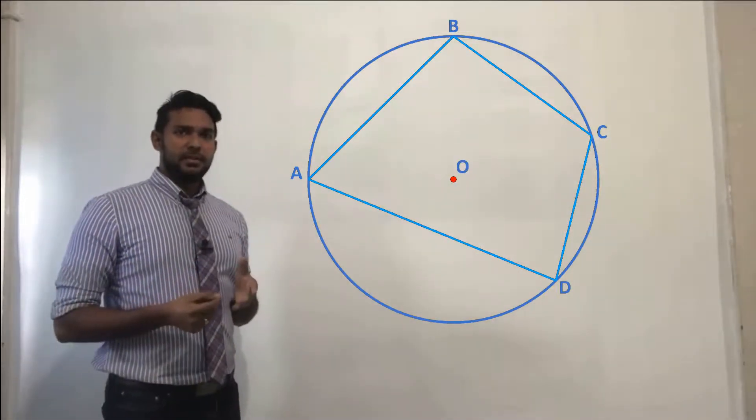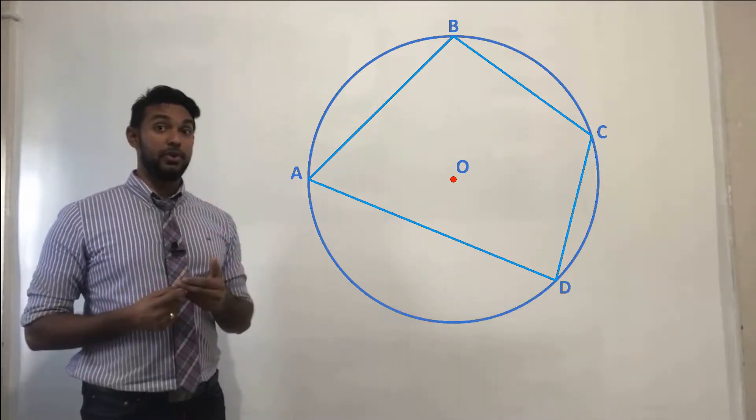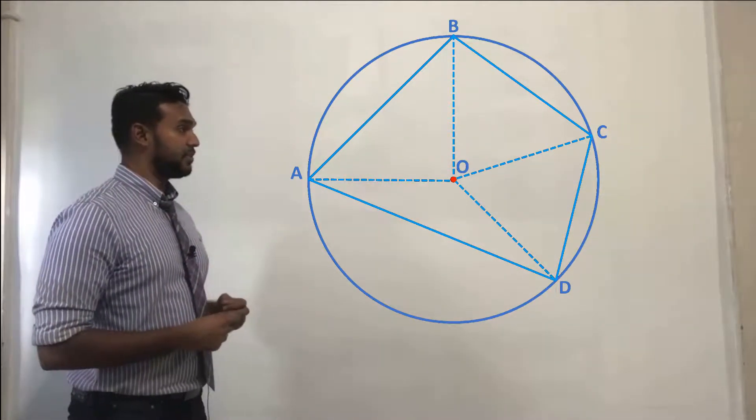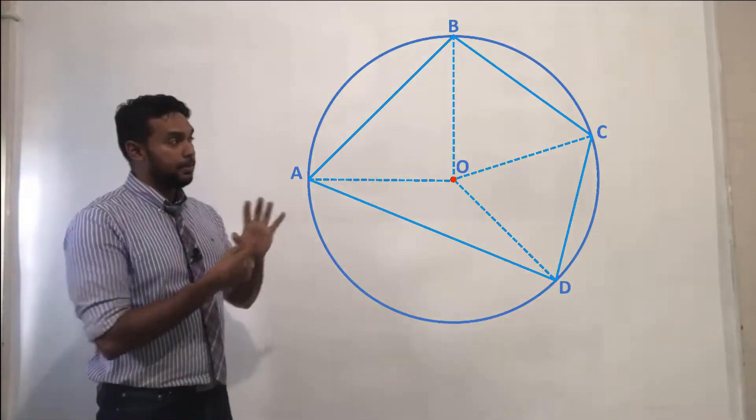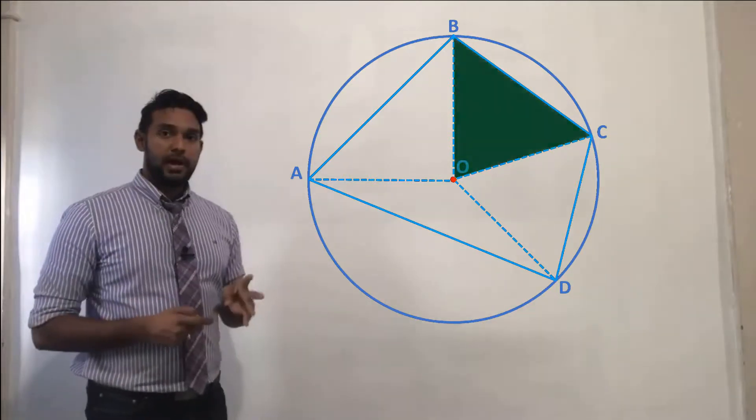And why do we need the center? Because we are going to need radii. Let's get four radii, one going to each vertex. And you're going to notice that these radii now cut up this bigger quadrilateral into four triangles.